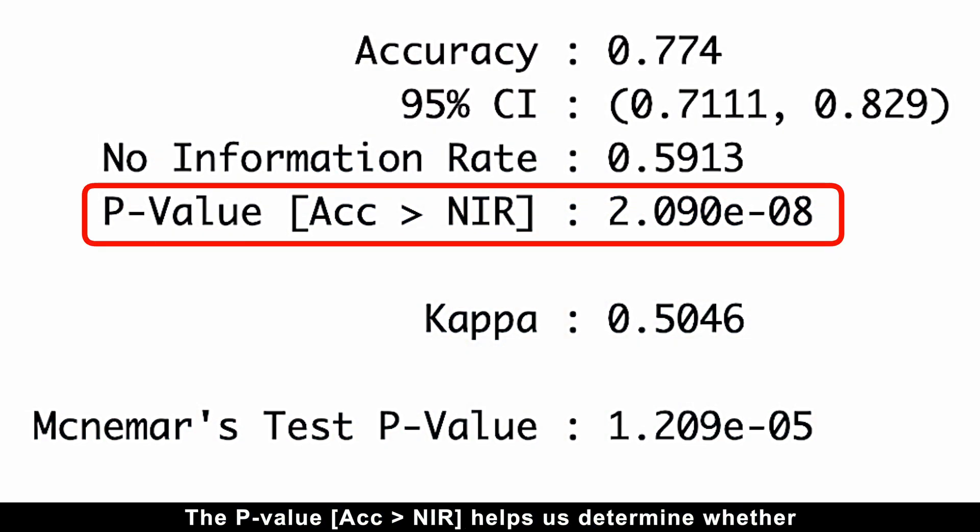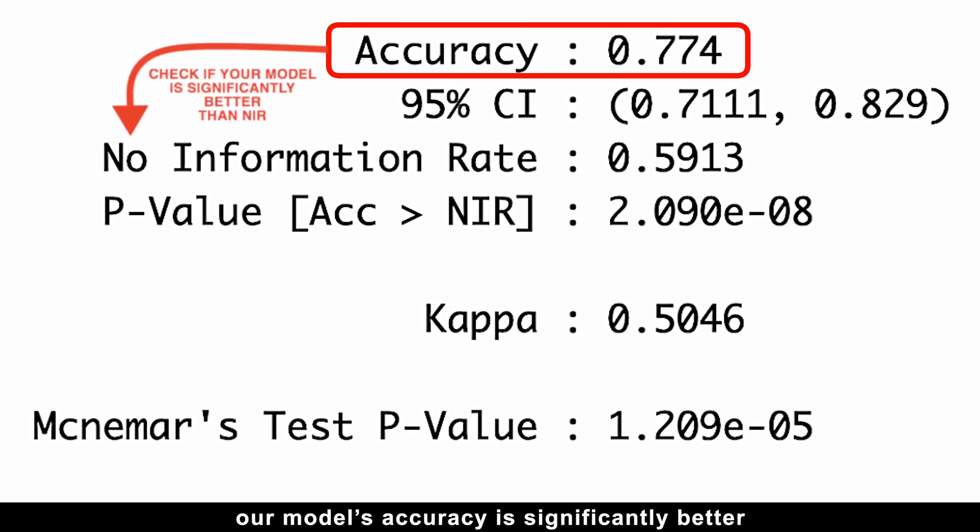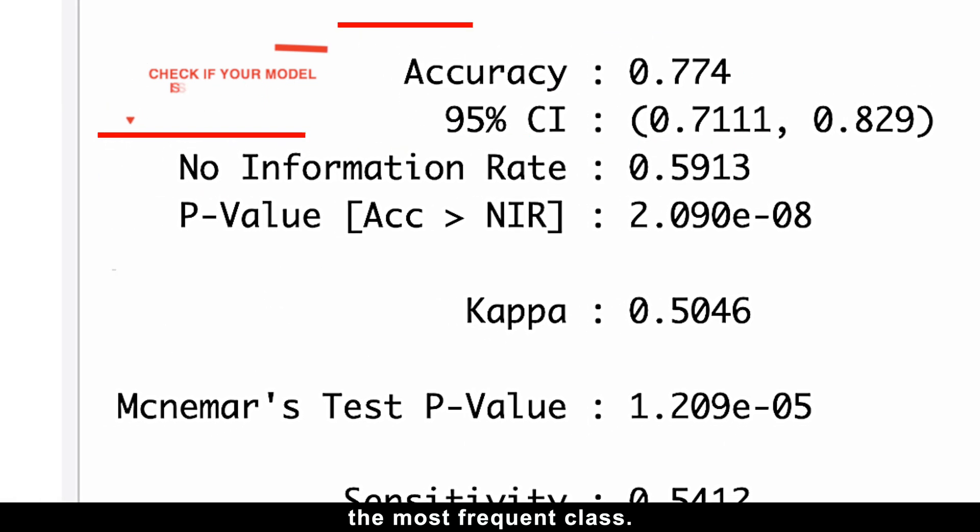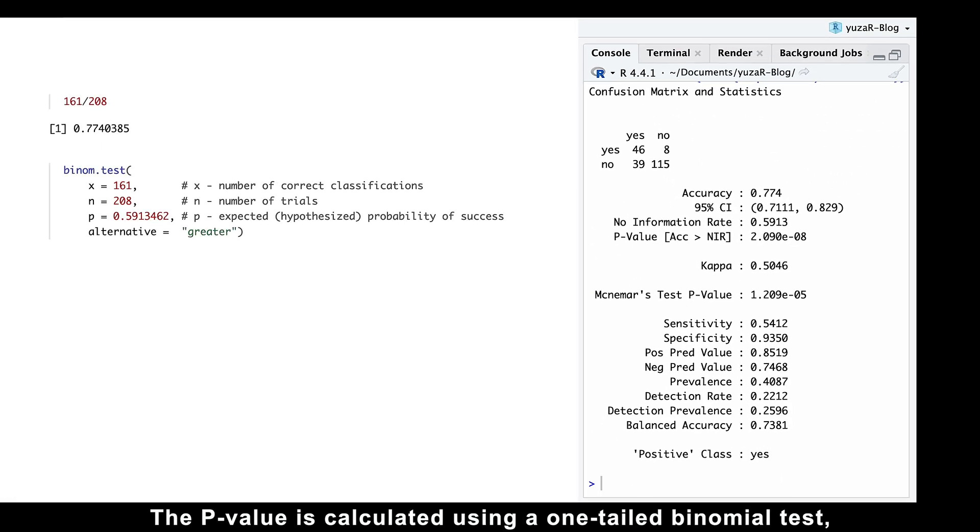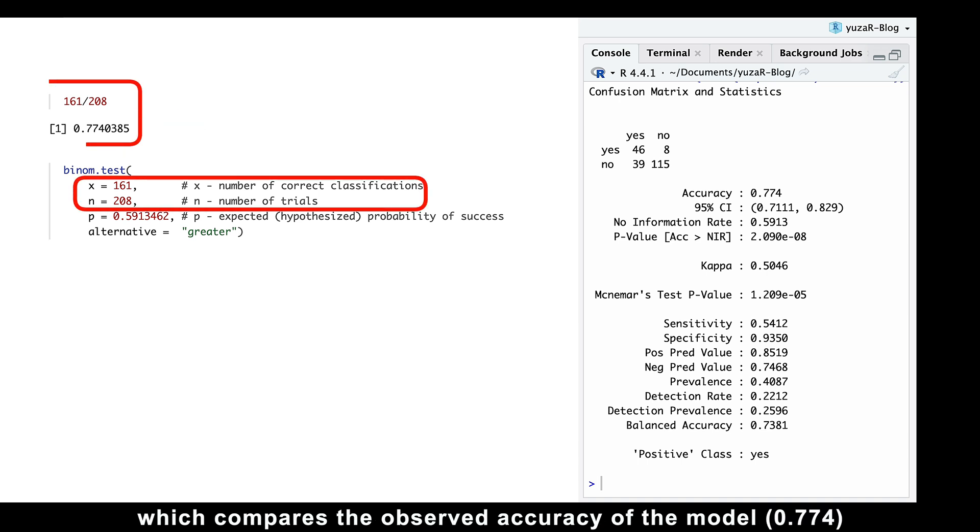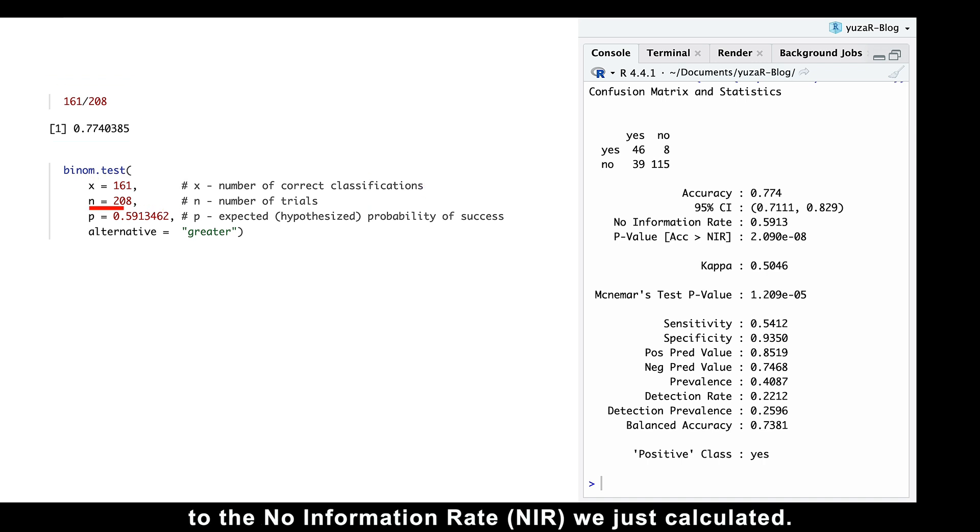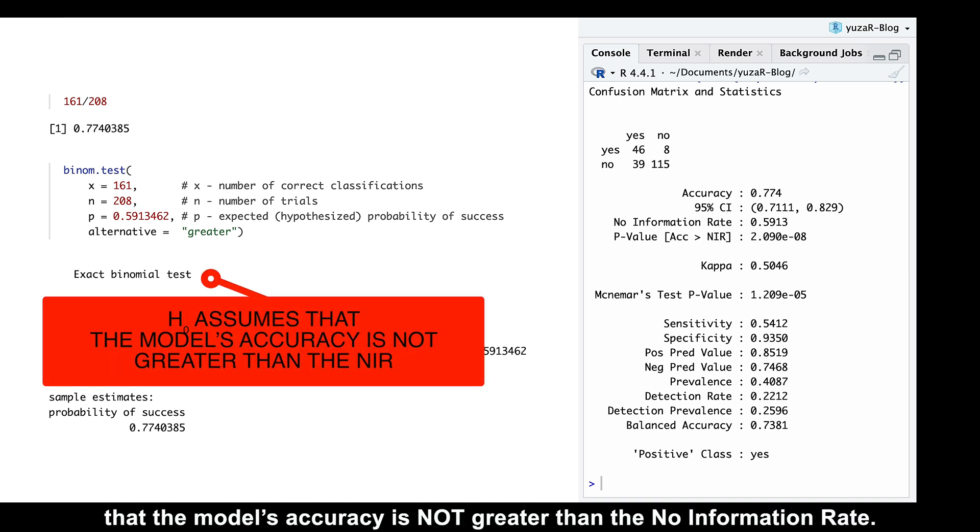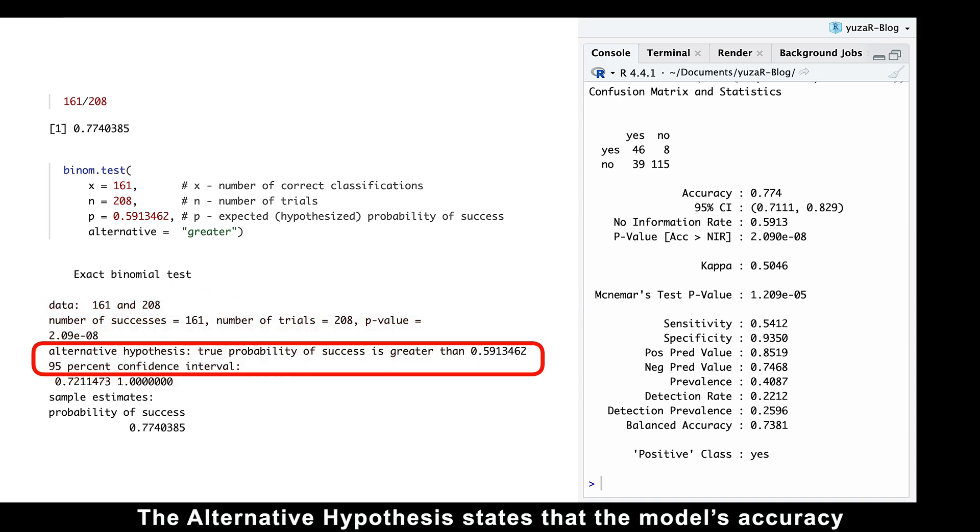The p-value helps us determine whether our model's accuracy is significantly better than what we would achieve by simply predicting the most frequent class. And the p-value is calculated using a one-tailed binomial test, which compares the observed accuracy of the model, 0.774, to the no information rate we just calculated. Here's how to interpret it. The null hypothesis assumes that the model's accuracy is not greater than the no information rate. The alternative hypothesis states that the model's accuracy is greater than the no information rate.